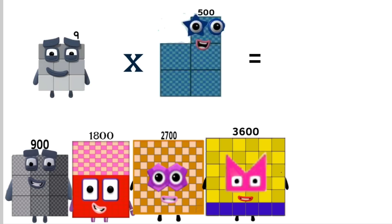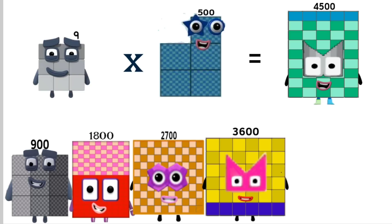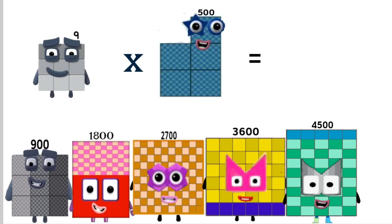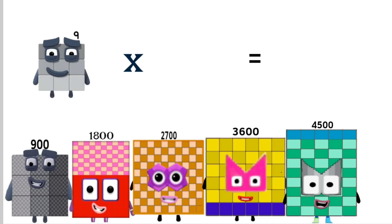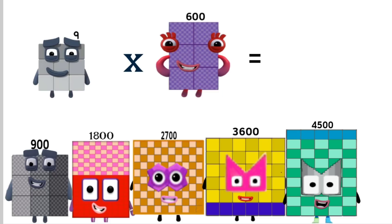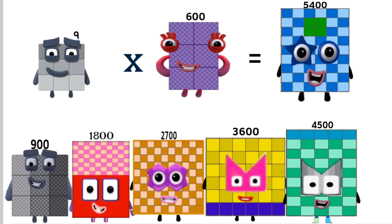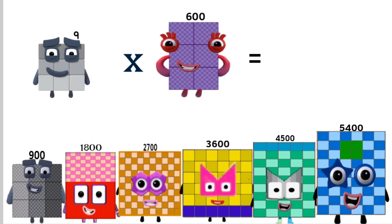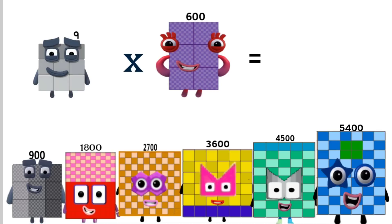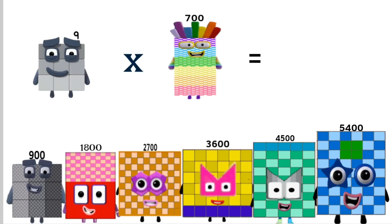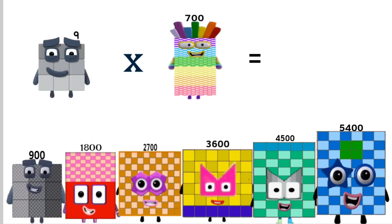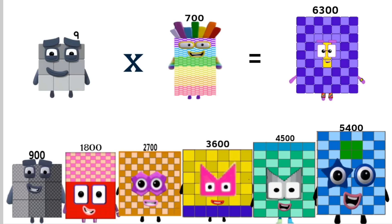Times 500 equals 4,500. Times 600 equals 5,400. Times 700 equals 6,300.